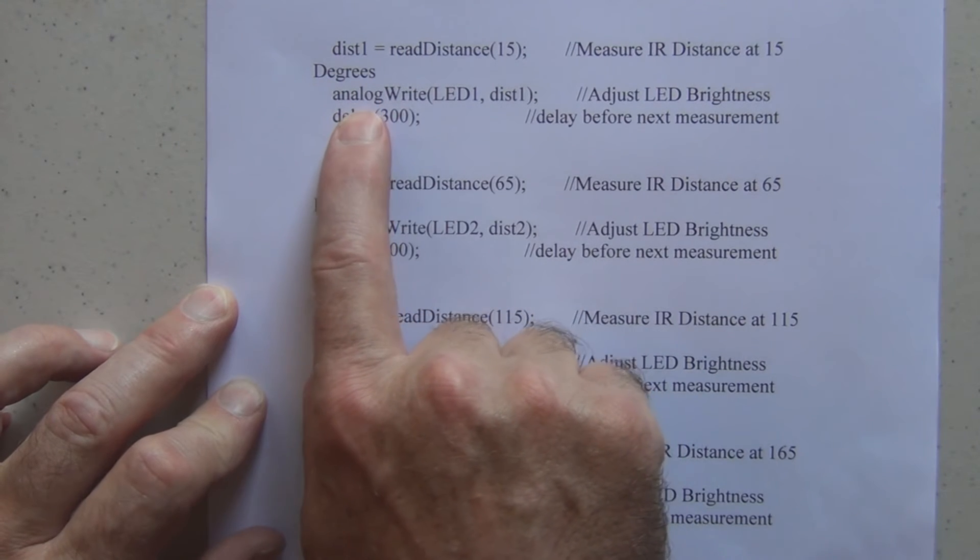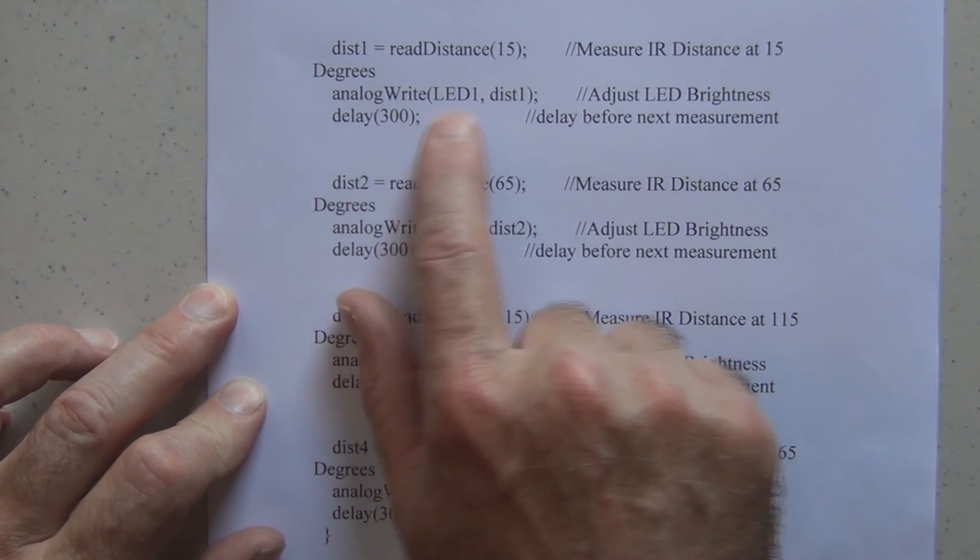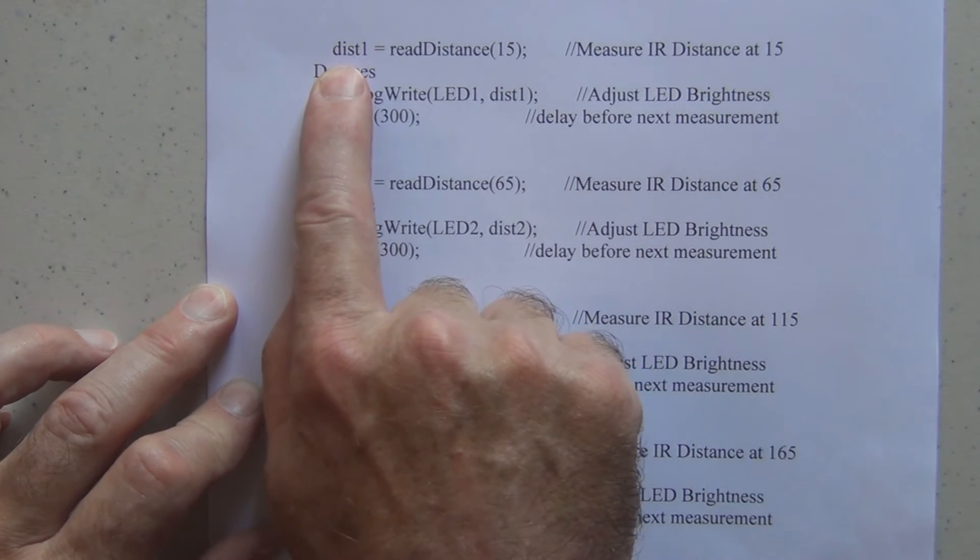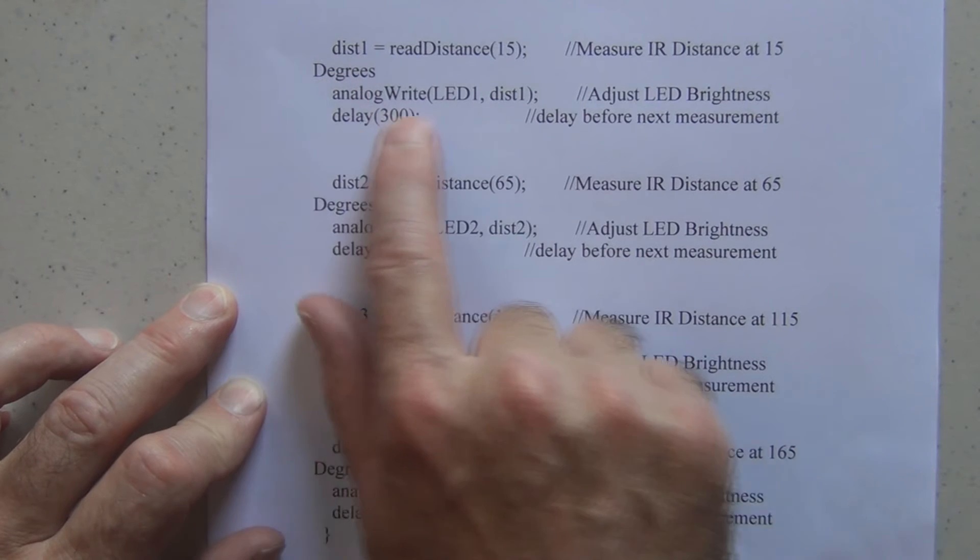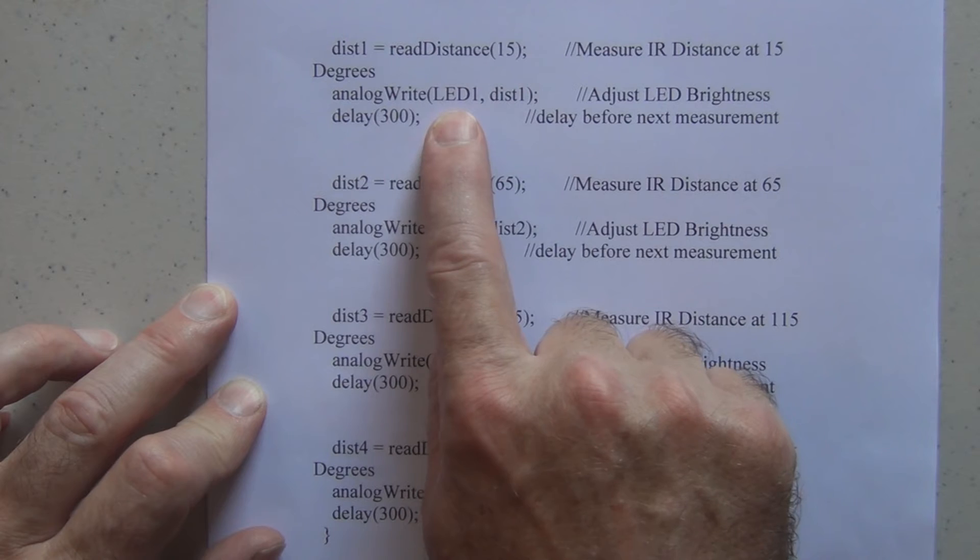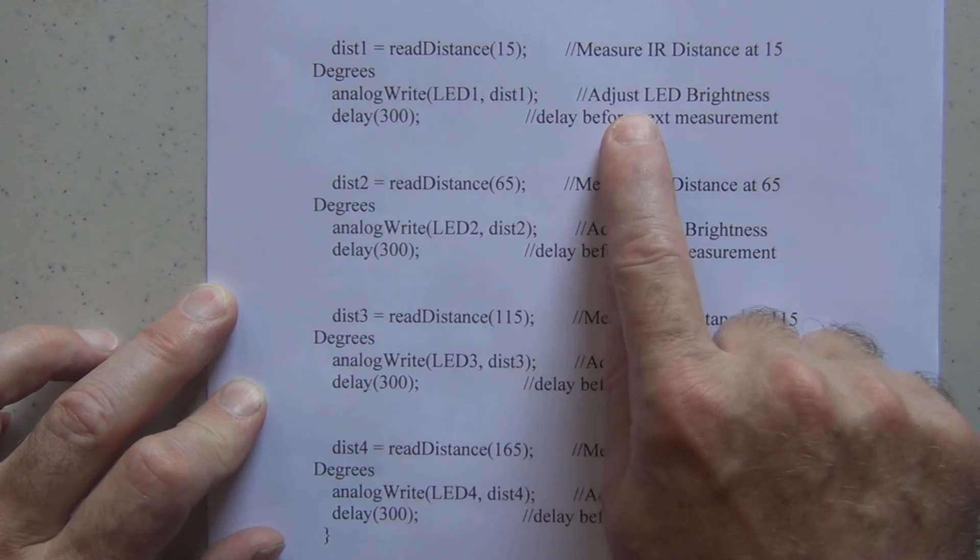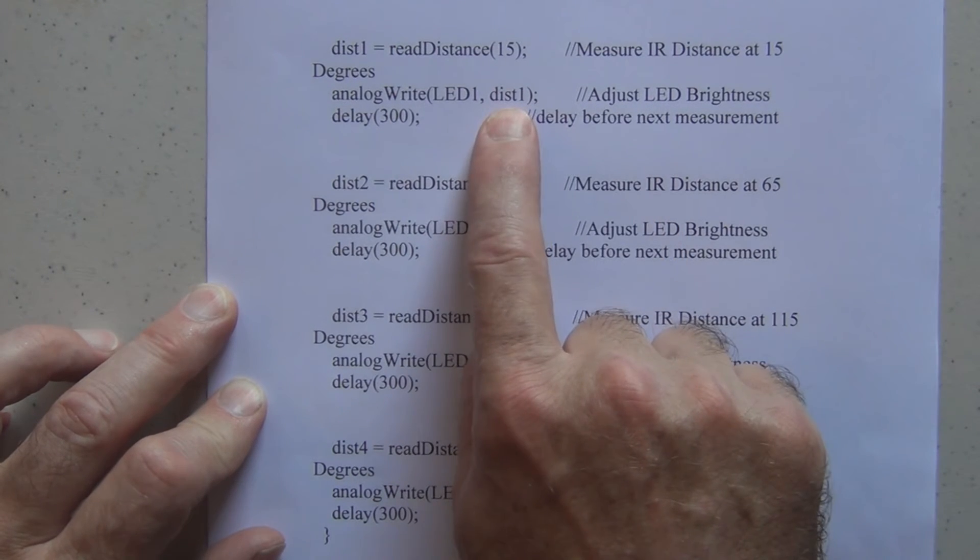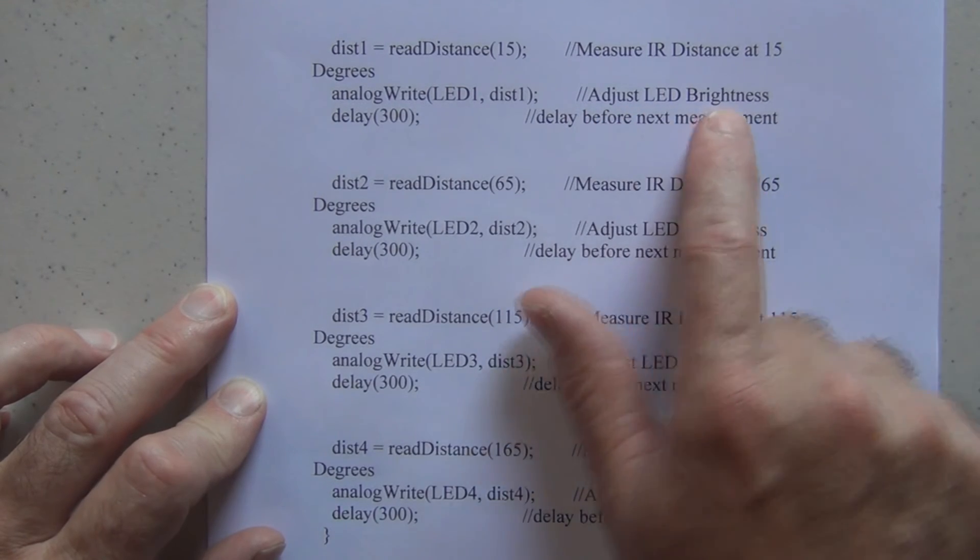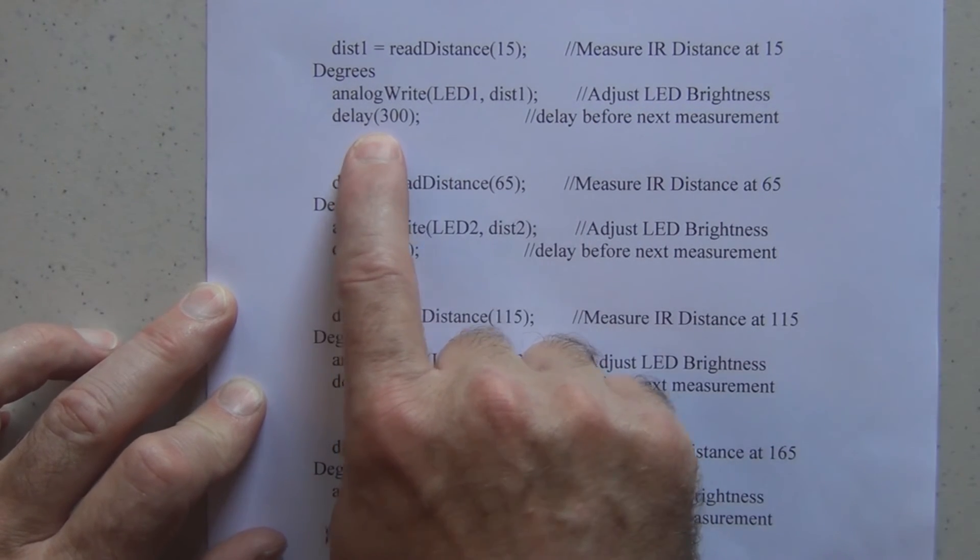And then what we do is we analogWrite using this information here from the IR sensor to light the LED 1. And then that adjusts the pulse width modulation, so we adjust the LED brightness, and then we are going to have a delay of 300.